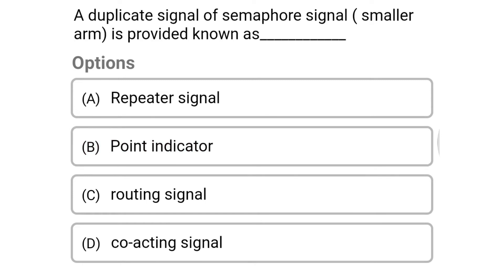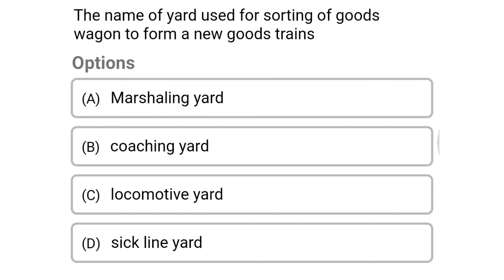Next question: a duplicate signal of a semaphore signal with a smaller arm is provided, known as — option A: repeater signal, option B: point indicator, option C: routing signal, option D: co-acting signal. The correct answer is option A: repeater signal.